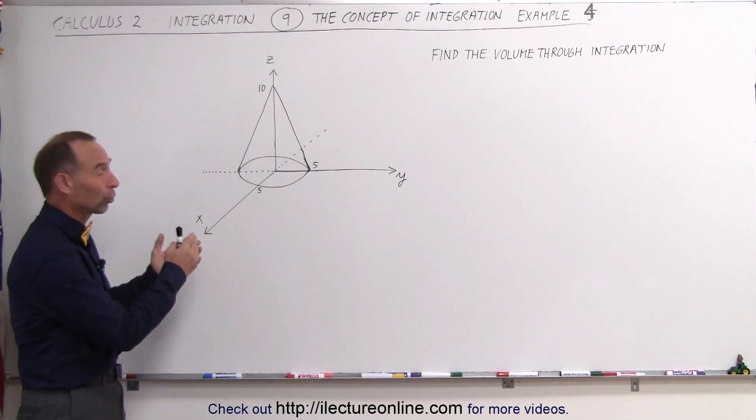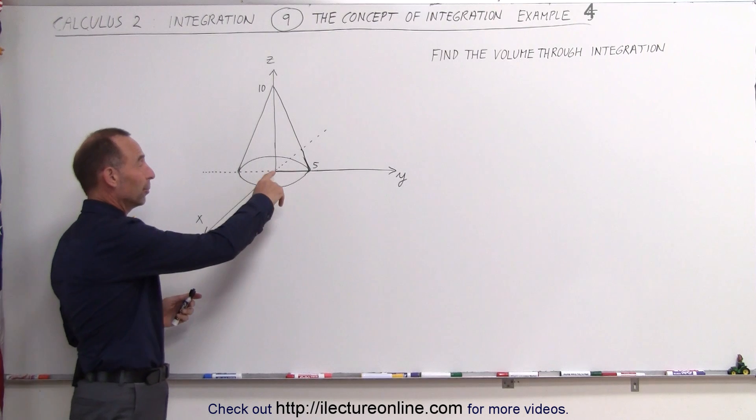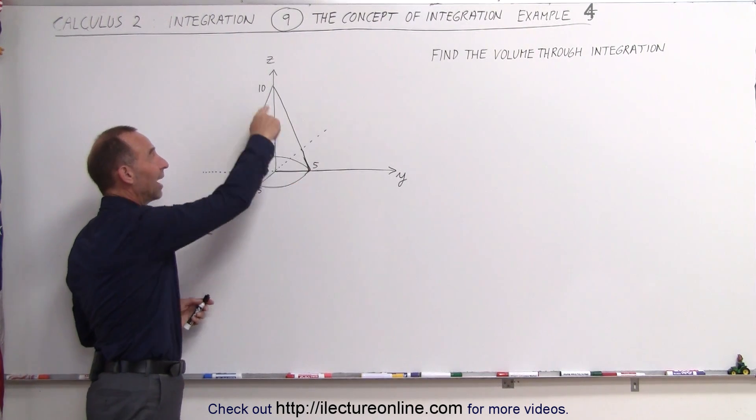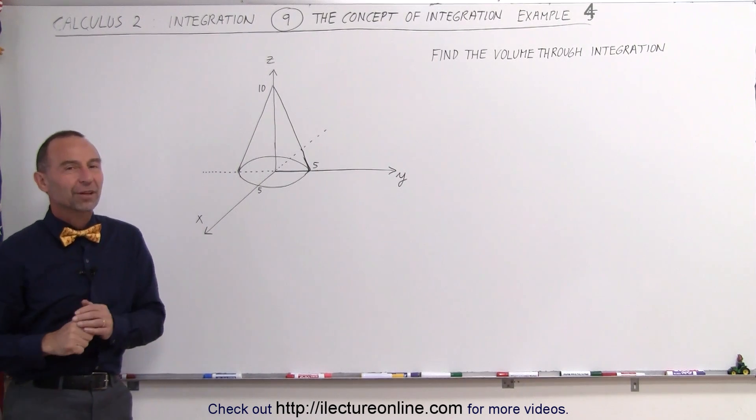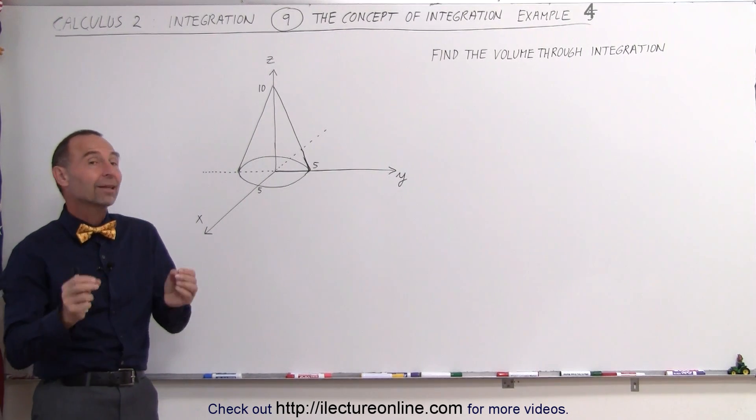Here we have what we call a circular cone. The radius of the base is 5, the height is 10, and we're trying to find the volume of that cone. Integration is perfect for that task, and let me show you how that works.